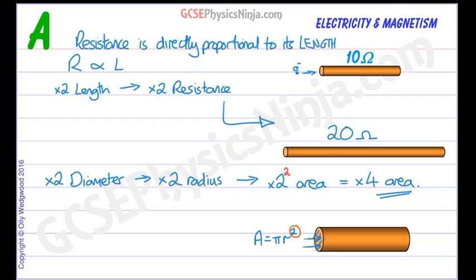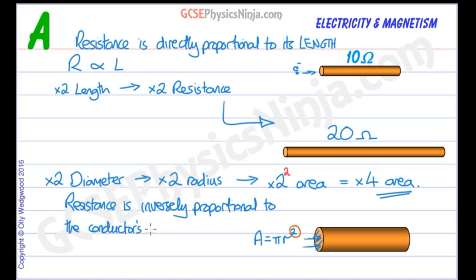Now the resistance will therefore decrease because it's much easier for the electrons to flow. So there are more paths. In fact the mathematical relationship is this: resistance is inversely proportional to the area.